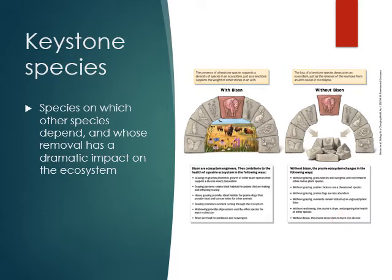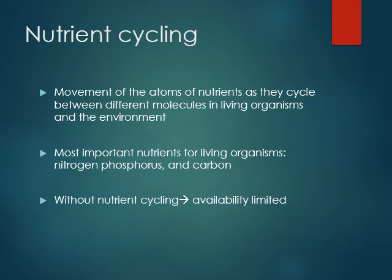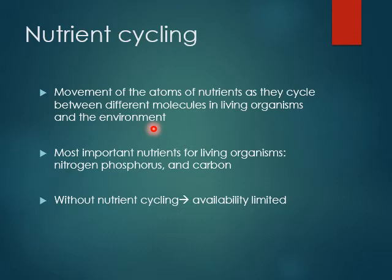Bison are really important in this ecosystem, and part of the reason is nutrient cycling — bison are a huge part of nutrient cycling in the American prairie. Nutrient cycling is the movement of atoms of nutrients as they cycle between different molecules, living organisms, and the environment. The most important nutrients for living organisms are nitrogen and phosphorus — and we'll also touch on the carbon cycle. Without nutrient cycling, you have limited availability of these nutrients, meaning decomposers, consumers, and producers aren't able to take them up and use them.